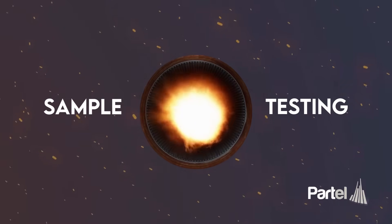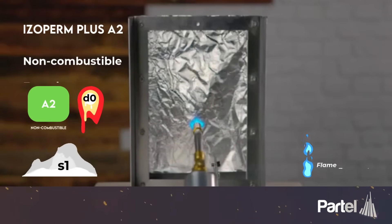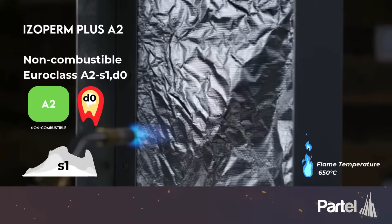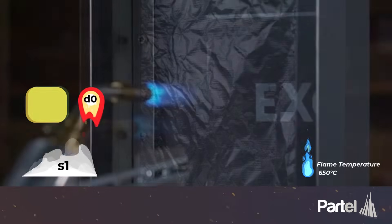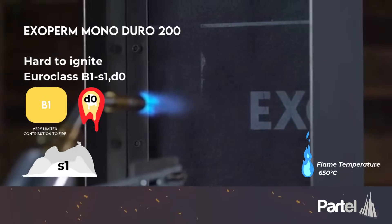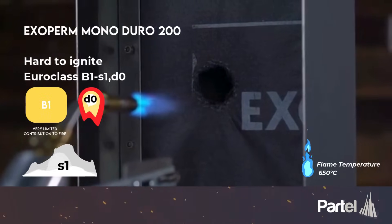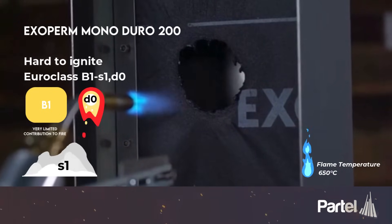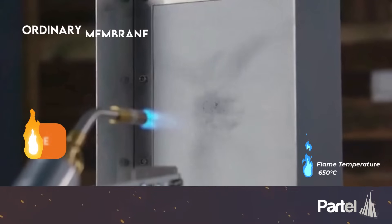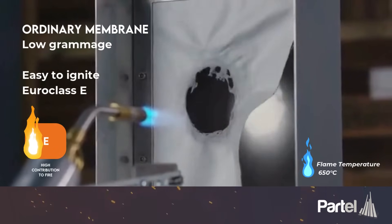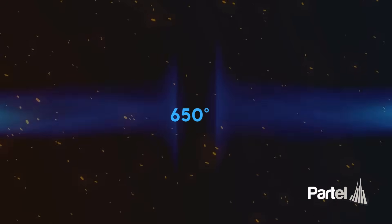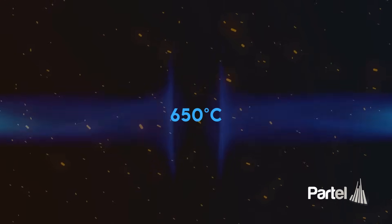In the next few videos we'll see some sample testing. The first product is Isoperm Plus A2, a non-combustible vapor control layer with a Euroclass A2 s1 d0 rating. Next is the Exoperm Monoduro 200, a membrane that is hard to ignite with a Euroclass B s1 d0 rating. Finally, a low grammage ordinary membrane, easy to ignite, with a Euroclass E rating. All tests were conducted with a 650 degree Celsius flame.